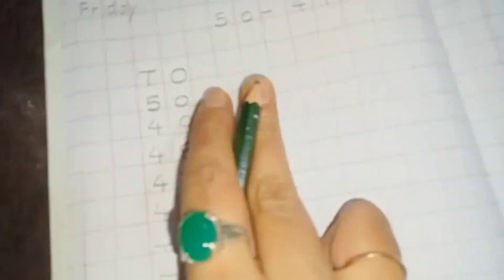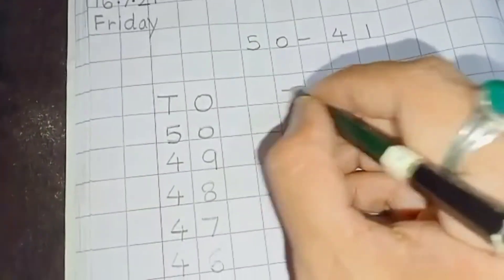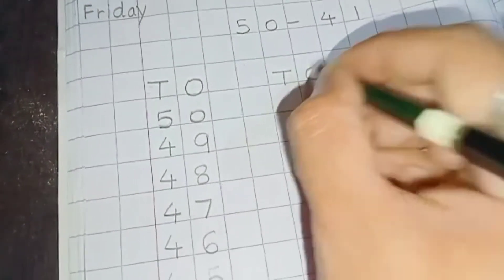Now we will leave two boxes. Then again write 10s and 1s. Then write down 50.